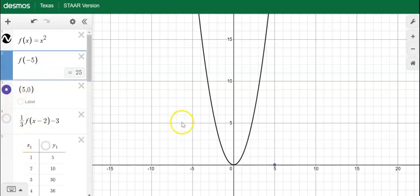You could also plot points anywhere on the graph. So for example, we have (5, 0). You could also choose to have it labeled on there.